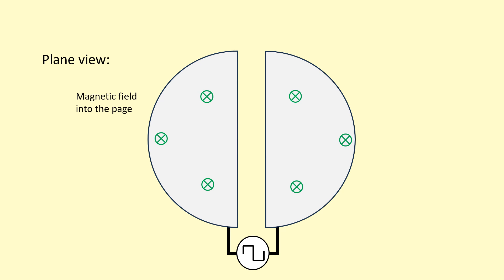It could be coming out of the page as well — it would just spiral in the opposite direction if the field was coming out of the page. In the center we put a proton. This proton isn't going to experience a magnetic force at the very beginning because for a magnetic force to be exerted on a particle, the particle needs to be moving, so there's no magnetic force at the start.